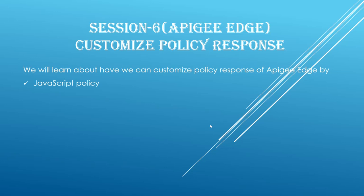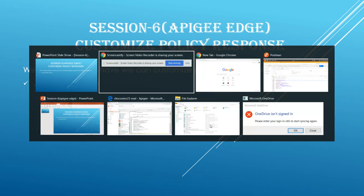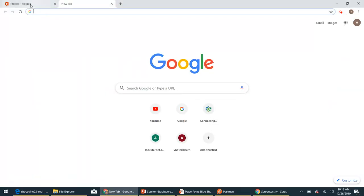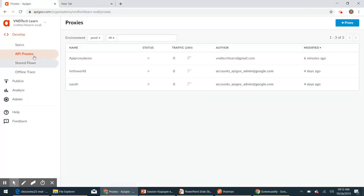Hi, this is session 6 of the Apigee Edge course for beginners. In this session we will discuss and learn how to customize the policy response of Apigee Edge. If it is not clear right now, don't worry — we will see this in action. Let's login into the Apigee Edge UI and click API Proxies.